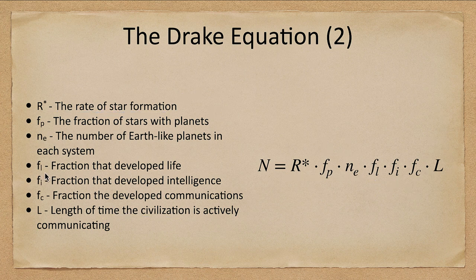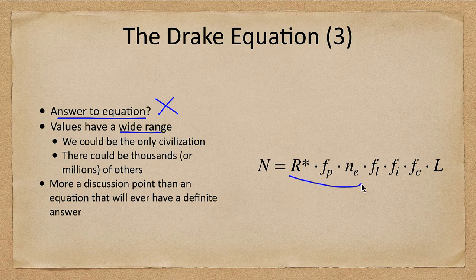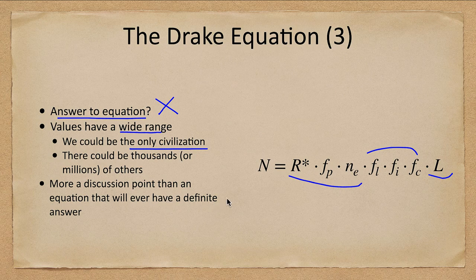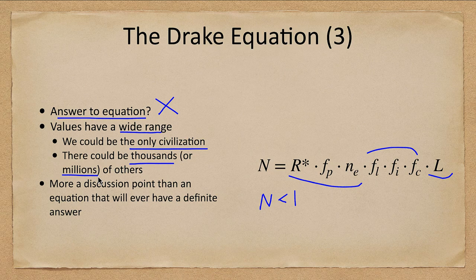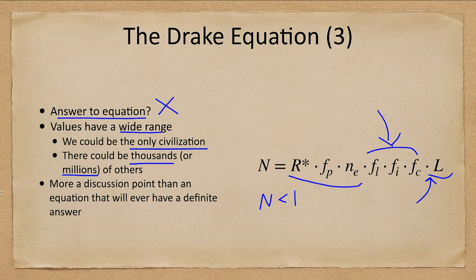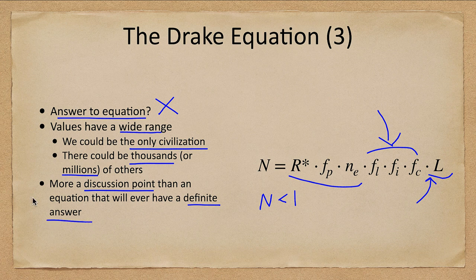So what is the answer to this equation? Well, there is none. There is no exact answer to this equation. The values have a wide range. We can have a pretty good estimate on the first three. But depending on what you put in for these and for this last one, we could be the only civilization in the galaxy. We could get N of less than one, in which case it would just be us. Or there could be thousands or millions of other civilizations. It just depends on what your assumptions are, especially for the development of life and how long a civilization survives. It's really not an equation meant to give us an answer more as a discussion point. Let's discuss what the probabilities of life are. And it's unlikely that this is really ever going to have any kind of definite answer.